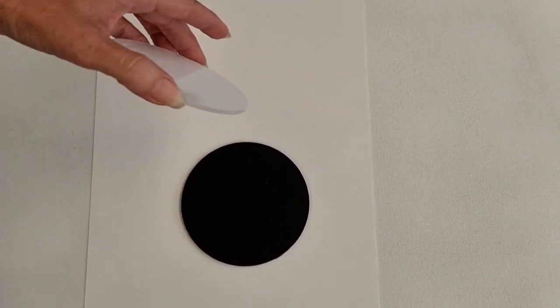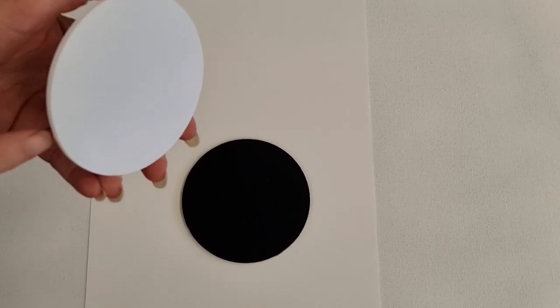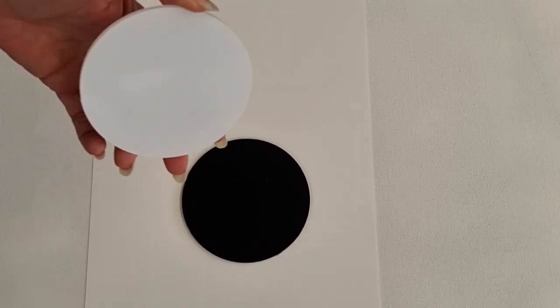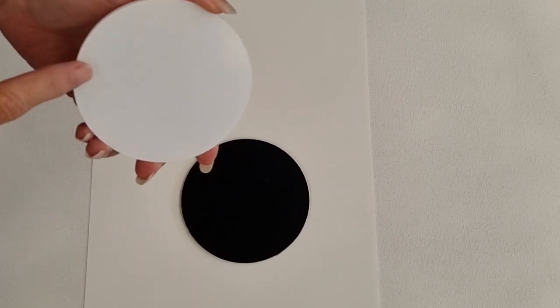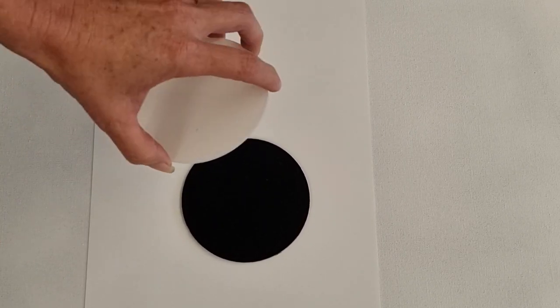This is our acrylic disc. It's got a protective coating on either side, so of course we're going to peel this off before doing our artwork. The coating can be white, it can be clear, so just be aware there's a protective coating on both sides.